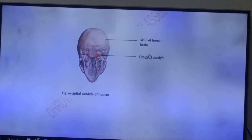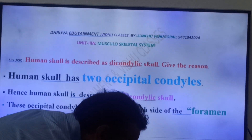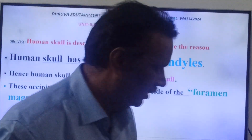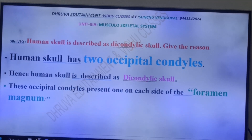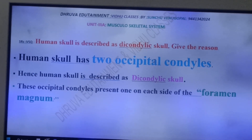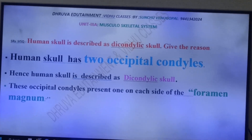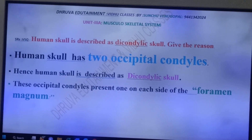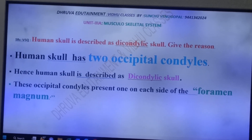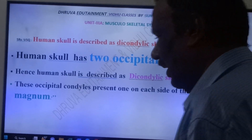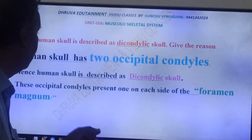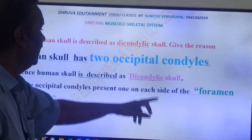Now, coming to our answer: why is the human skull called a Dicondylic skull? Because the human skull has two Occipital Condyles, hence it is called a Dicondylic skull. This is very important. How many Occipital Condyles are there in the human skull? Two Occipital Condyles — and because of that, we are calling it a Dicondylic skull.